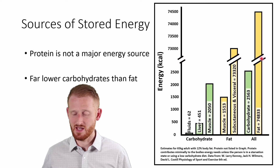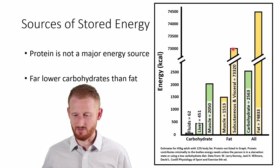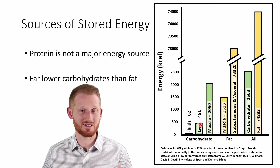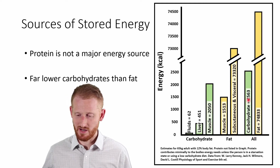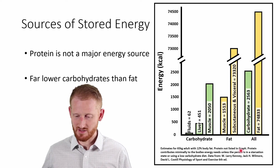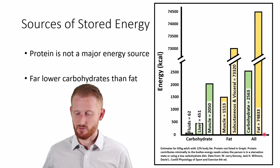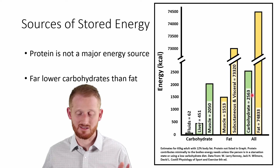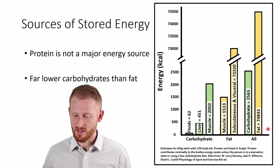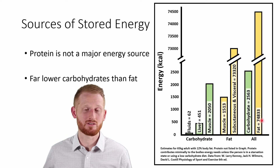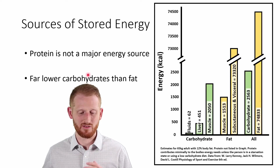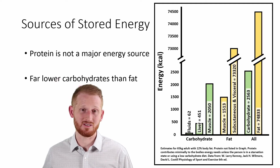That subcutaneous and visceral fat is far more than we have stored of anything else. I actually had to put a break in the axis here because I couldn't possibly show this bar while also showing the other smaller bars — the y-axis would be so large the others would look like nothing. If you put all the carbohydrate sources together and all the fat sources together, we end up with around 2,563 kilocalories of carbohydrates and around 74,833 kilocalories of fat stored in the body.